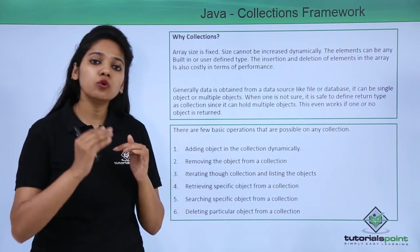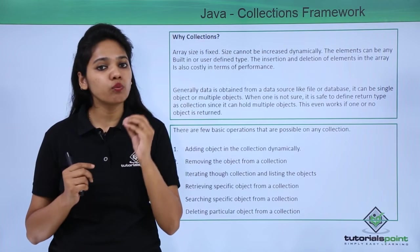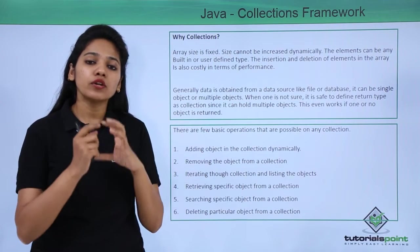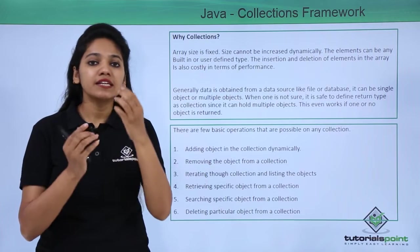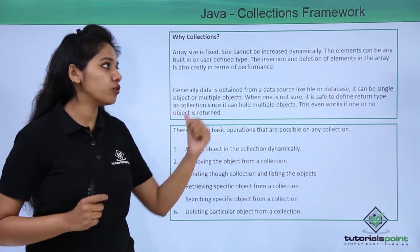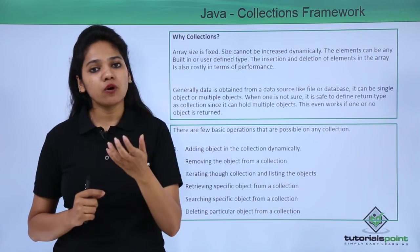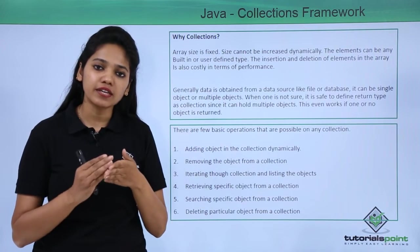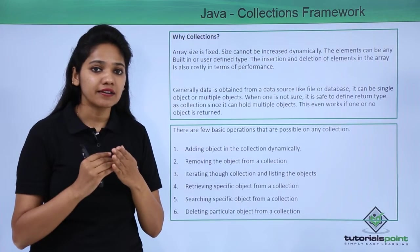So in order to overcome these disadvantages, where you want to store the data at runtime and where you do not want to specify the size of your object, in those cases you use collection — where you create an object without defining the size, and you're just storing the data at runtime.